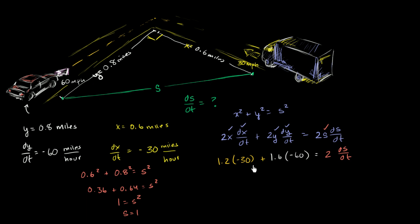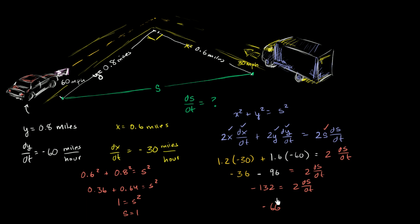On the left-hand side: 1.2 times negative 30 is negative 36, and 1.6 times negative 60 is negative 96. So negative 36 plus negative 96 gives negative 132, which equals 2 times ds/dt. Dividing both sides by 2, we get ds/dt equals negative 66 miles per hour. Does it make sense that we got a negative number? Sure — this distance is decreasing right at this moment as they approach the intersection.